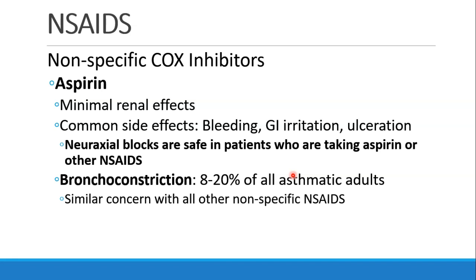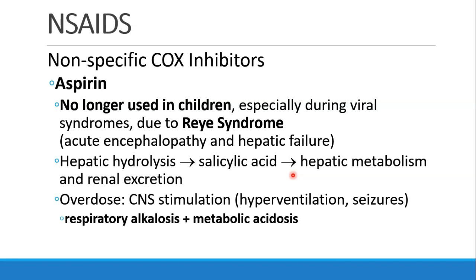Patients who are taking aspirin may generally have neuraxial blocks like spinals or epidurals even while still taking aspirin or other NSAIDs. A significant portion of asthmatic adults — somewhere between 8 and 20 percent — are at risk for bronchoconstriction when they receive aspirin, and this is true for all other nonspecific NSAIDs as well. Aspirin is not used in children anymore, especially if they have any sort of viral syndrome, because of Reye's syndrome, which involves acute encephalopathy and hepatic failure.